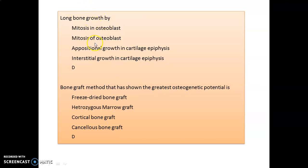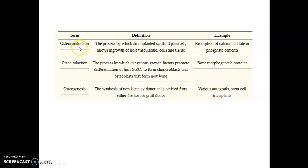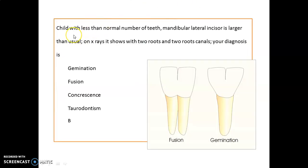Long bones grow by interstitial growth in cartilage epiphysis. The bone graft method that has shown the greatest osteogenic potential is cancellous bone graft. Remember: osteoconduction is a process by which an implanted scaffold passively allows in-growth of host vasculature, cells, and tissue — examples include resorption of calcium sulfate or phosphate cement. Osteoinduction is a process by which exogenous growth factors promote differentiation of host mesenchymal cells to form chondroblasts and osteoblasts — the best examples are bone morphogenetic proteins (BMPs). Osteogenesis is the synthesis of new bone by donor cells derived from either the host or graft donor — examples are autografts and stem cell transplants.